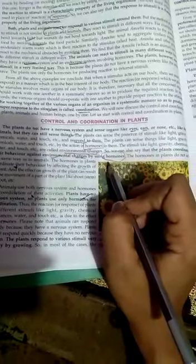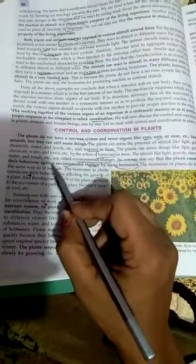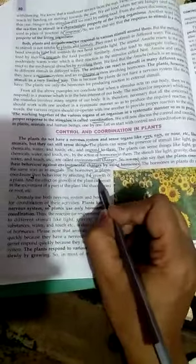The hormones in plants do not act in the same way as those in animals. Plant hormones coordinate their behavior by affecting their growth, either at the shoot part or the root part.